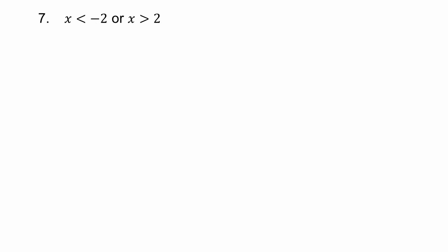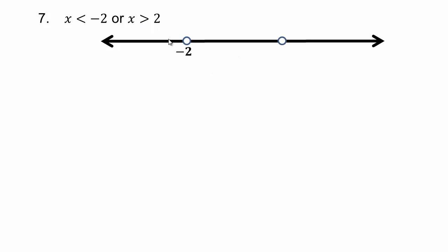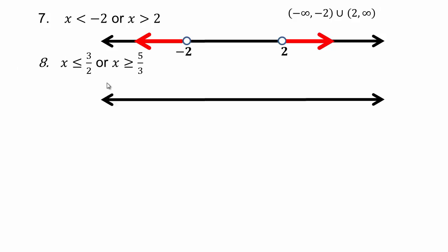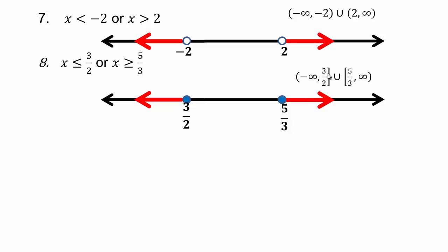For x less than negative 2 or x greater than 2: this is an 'or', so negative 2 and 2 are holes. Less than negative 2 goes left, greater than 2 goes right — two separate pieces, two separate intervals. The interval notation is negative infinity to negative 2, union, 2 to infinity. For the similar case where three-halves and five-thirds are included, you use square brackets: negative infinity to three-halves with square bracket, union, square bracket five-thirds to infinity.